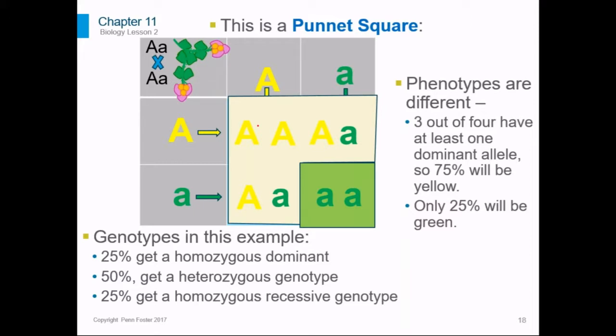As a general rule, you're almost always going to end up having many more individuals with the dominant trait than the recessive trait. And you've got to remember that genotypes are not the same as phenotypes. For this example, our genotypes were 25 percent, 50 percent, and 25 percent. But our phenotypes are different — we've only got two phenotypes: either yellow or green, there's nothing in between. So you've got 75 percent yellow and 25 percent green.